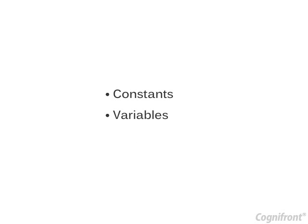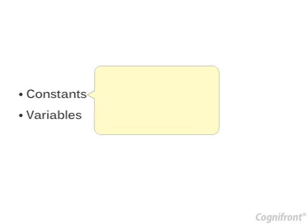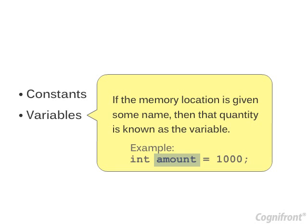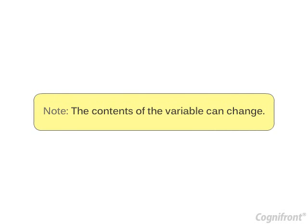Let's see what are constants and variables. A constant is a quantity that does not change. It is stored in the memory location of the computer. Now, if the memory location is given some name, then the quantity is known as the variable. Note that the contents of the variable can change.